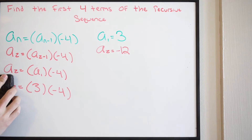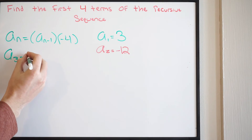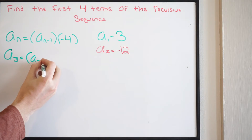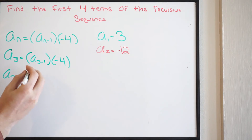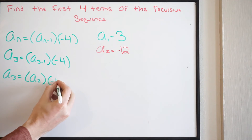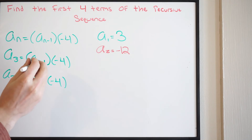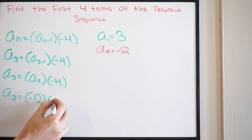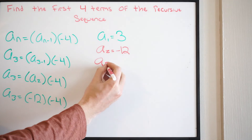Let's find our third term. Plugging in A of 3 for my variable, I'm going to get A of 3 equal to A of 3 minus 1, times negative 4. So that gives us A of 3 equal to A of 2 times negative 4. We know what A of 2 is — we just found it, it's negative 12. So A of 3 equals negative 12 times negative 4, which gives us positive 48.